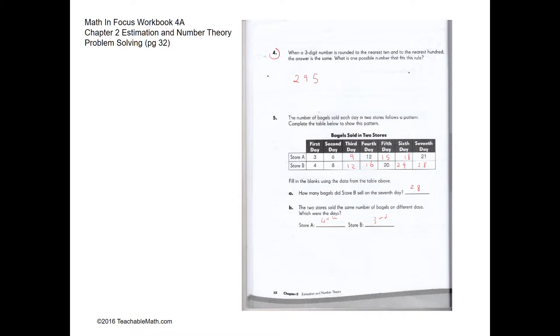Question 4. When a three-digit number is rounded to the nearest 10 or nearest 100, the answer is the same. One possible number could be 295.